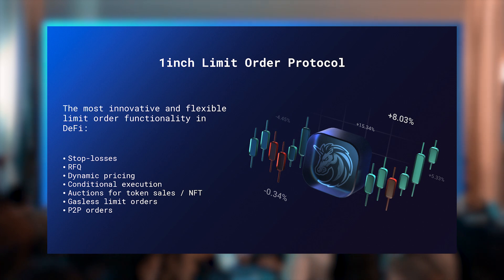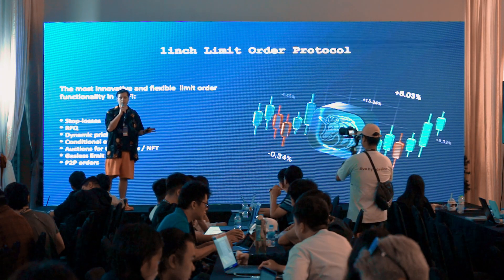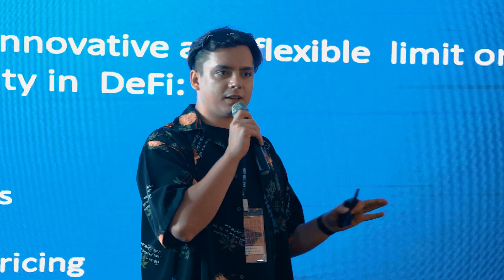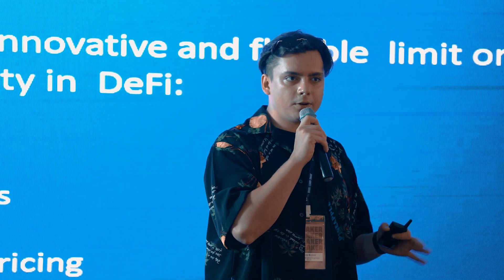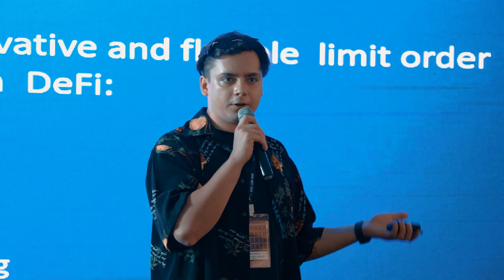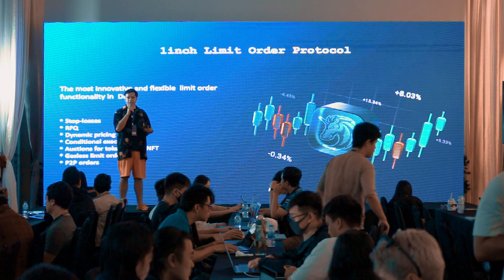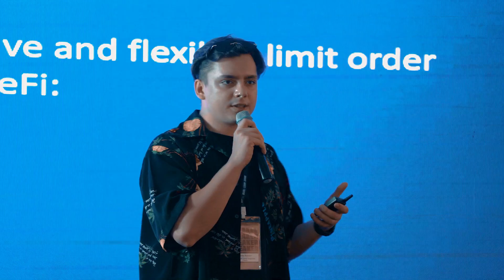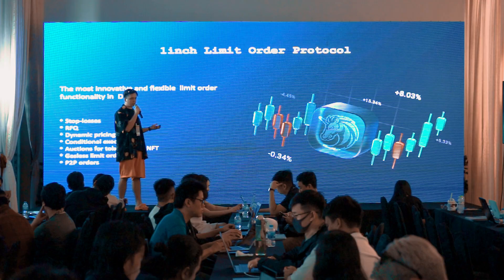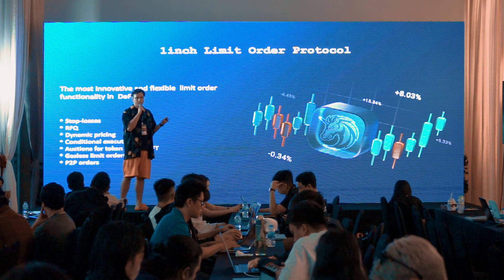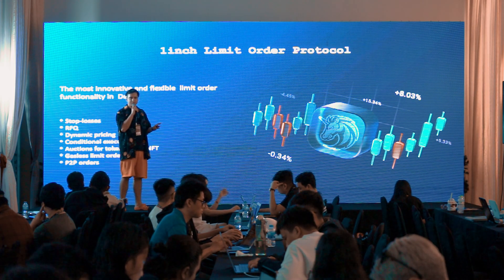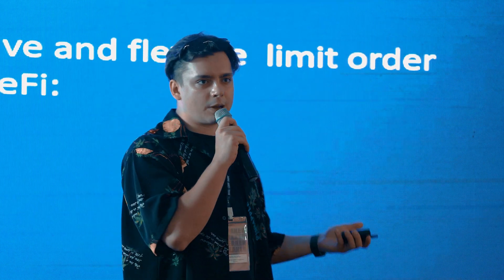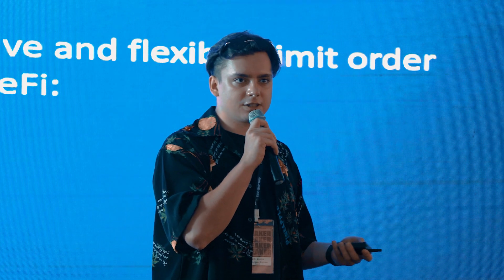What is the limit order protocol? It's a tool that allows you to interact with Ethereum or any other EVM-compatible blockchain in a more classical way for trading. You can make an order to swap Ethereum to DAI token with a specific rate and with additional constraints — like, for example, do it in the next three days or cancel. It allows you to make a lot of different custom constraints for the swap. It's also a pretty cool feature for users because it's gasless — the user just needs to create a limit order, and anyone can execute it without the user needing to pay for gas. So it's gasless swaps with custom features and constraints.